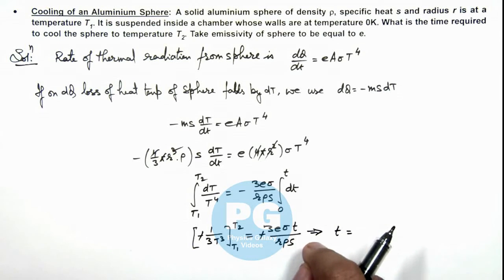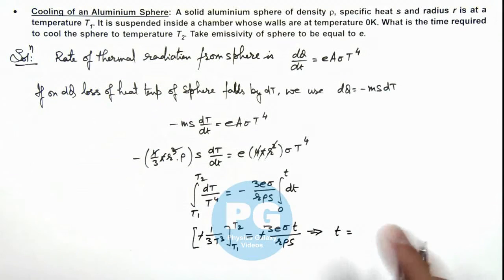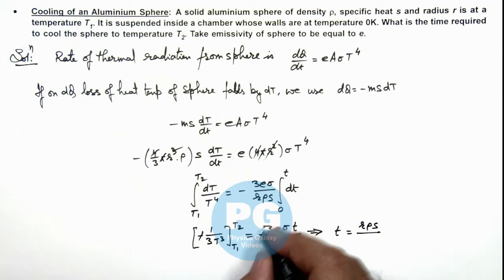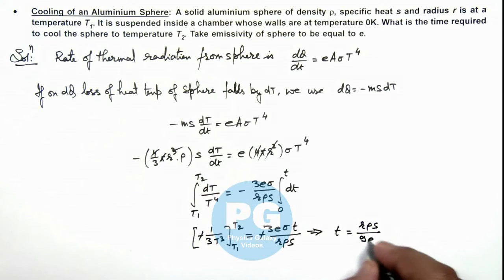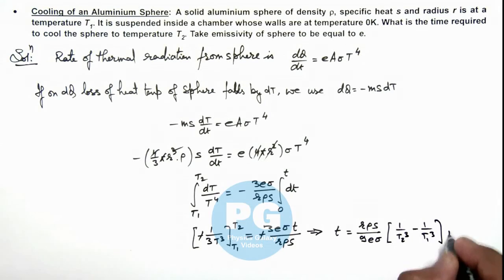And on simplifying this relation we get the time which it will take for a sphere to cool down to the temperature T2. It is rρs upon 9eσ multiplied by 1/T2³ minus 1/T1³. That is the result of this problem.